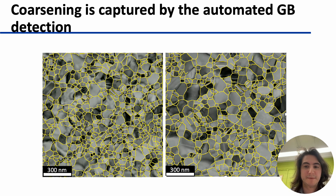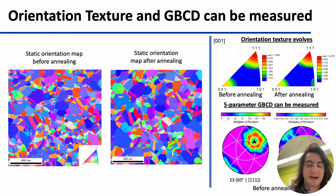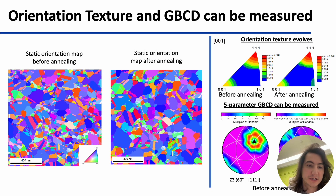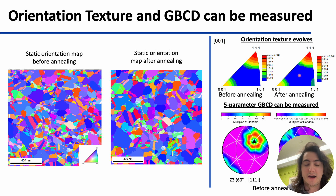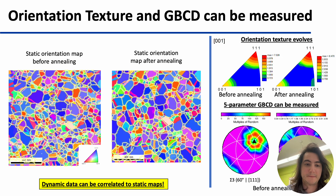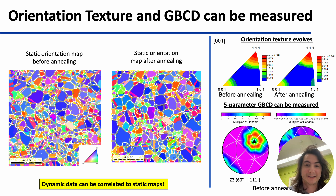But we can go a step further. Instead of just taking images, we can capture orientation maps statically before and after annealing. These orientation maps take something like 30 minutes to acquire each, but we are able to reconstruct the orientation texture evolution from beginning to end of the annealing step, as well as measure the five-parameter grain boundary character distribution and how that's evolving in time.